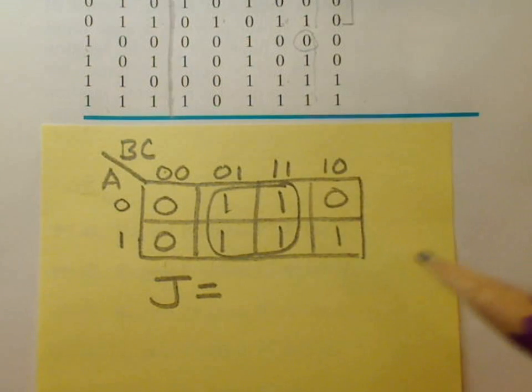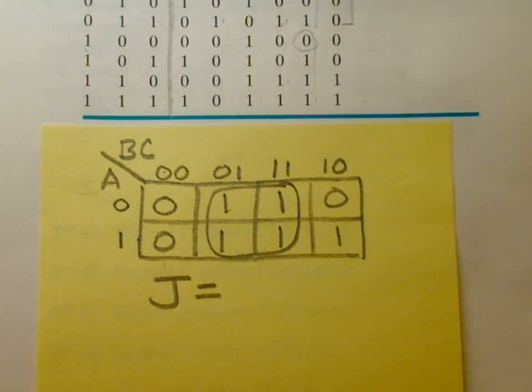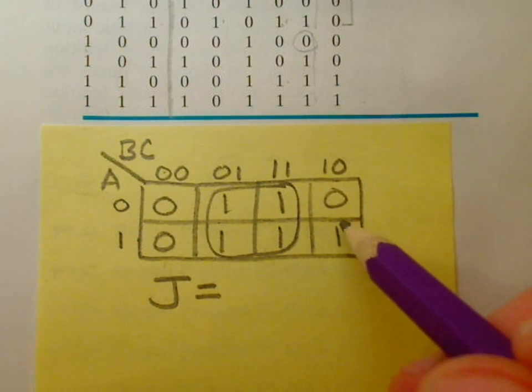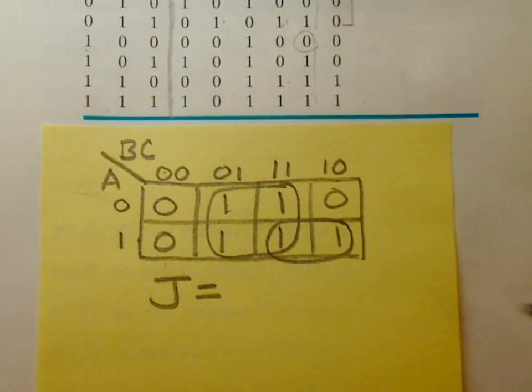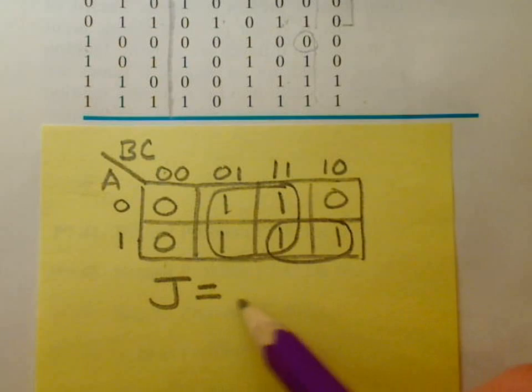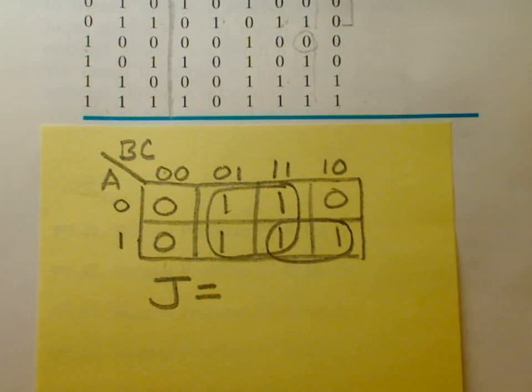And in Karnaugh maps, you can circle groups of two, four, eight, and so forth, but not do any diagonals. And you can also have overlapping circles if it helps you end up with a smaller circuit or an equation with fewer terms in it.